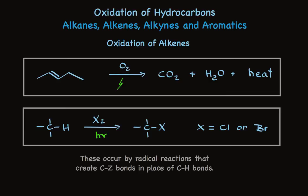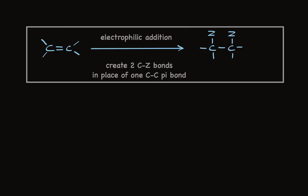In addition to these two oxidation reactions, there's another one that characterizes alkenes. Electrophilic addition is an oxidation reaction when two carbon-heteroatom bonds are formed. This fits the definition of oxidation. In place of one pi bond, we're creating two CZ bonds and no CH bonds. So, when we're adding a heteroatom to each carbon of an alkene, electrophilic addition is an oxidation reaction.